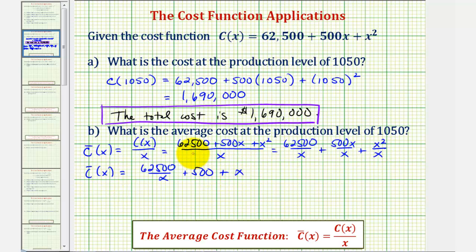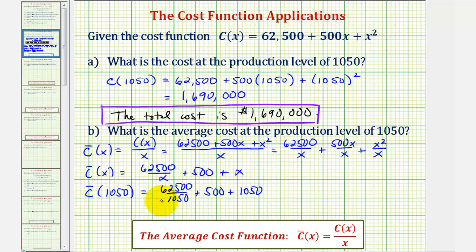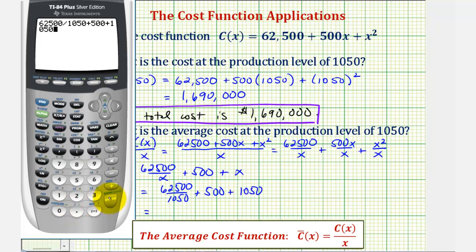Now we evaluate the average cost function at x equals 1,050. The average cost to the nearest cent is approximately $1,609.52.